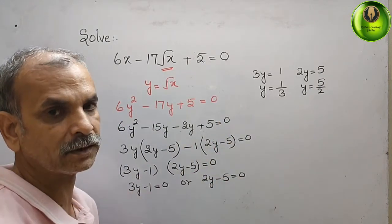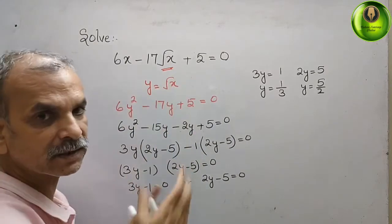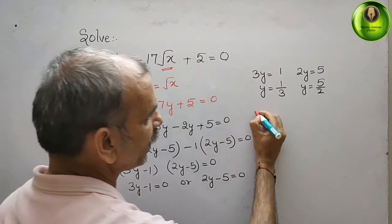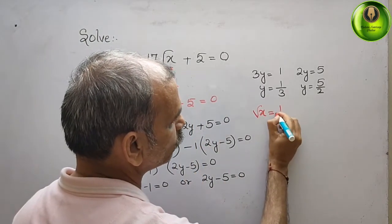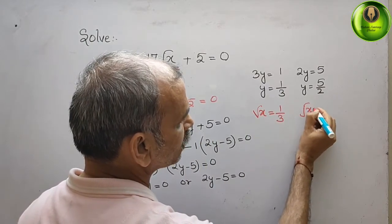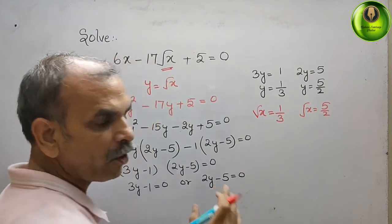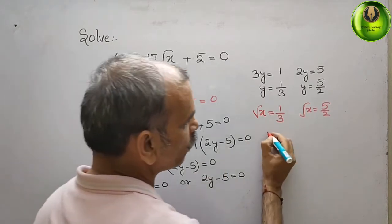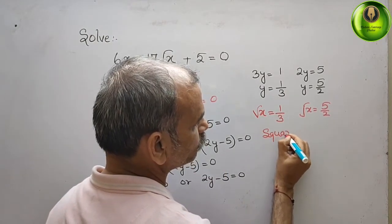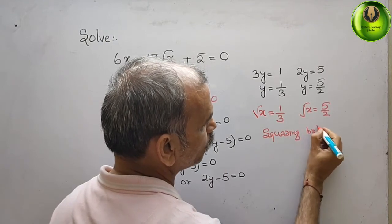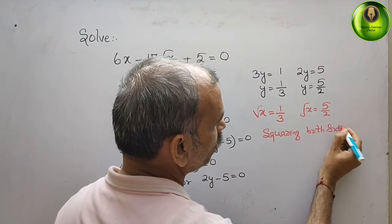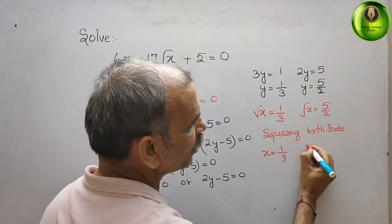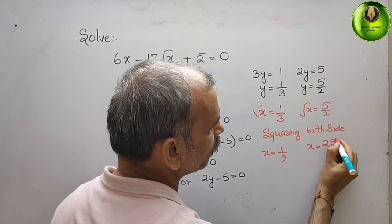We don't want the value of y — we want the value of x. Since y equals root x, we substitute back: root x equals 1 by 3, and root x equals 5 by 2. Squaring both sides gives x equals 1 by 9 and x equals 25 by 4. These are your answers.